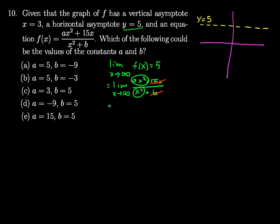As we get close to infinity, this will equal the limit as x goes to infinity of ax squared divided by x squared. We can notice that we have x squared on top and x squared on the bottom, so we'll just be left with a. But we already said our limit had to equal 5, so a must equal 5.